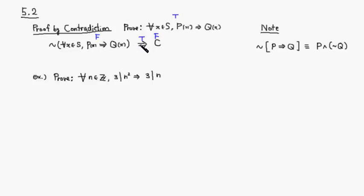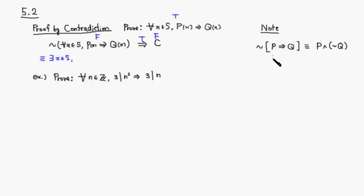By establishing that this implication to a contradiction is true, it implies that the original statement is true. Usually, the negation of a universal statement can be written as: there exists some x in S such that — remember the negation of p implies q — the only way for the implication to be false is to have a true hypothesis and a false conclusion. So you have p of x and at the same time the negation of the conclusion.